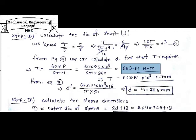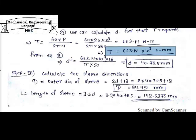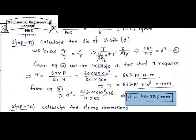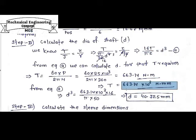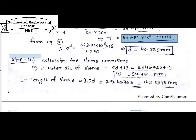Putting the power and speed values into the torque equation, we get torque = 663.14 N·m, which equals 663.14 × 10³ N·mm. Substituting this T value and the permissible shear stress into Equation A, we calculate the shaft diameter d = 40.725 mm.